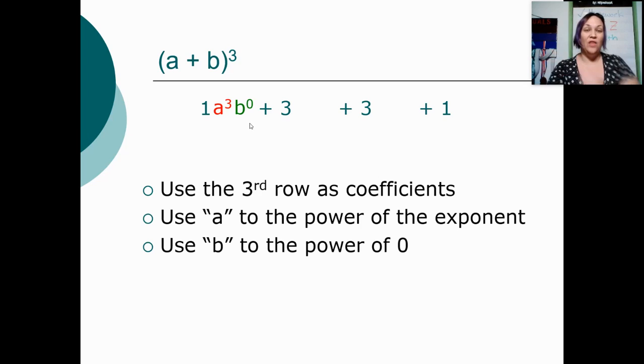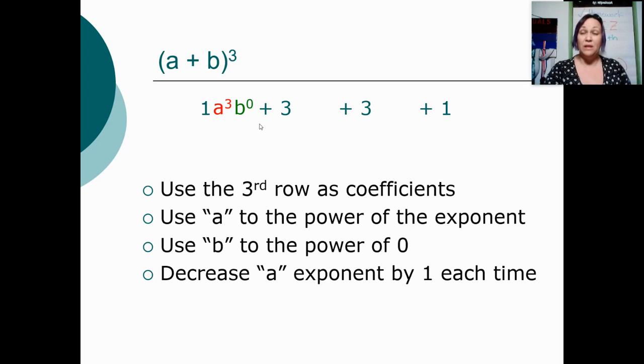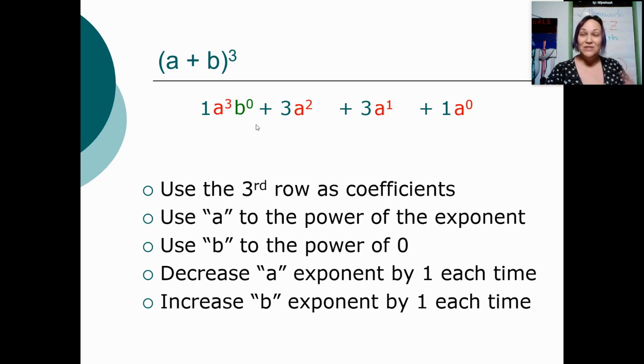Then we need to fill in the other terms. So for your letter a, since we started with a really big number, we're going to decrease it by one each time. So if we start with a to the third, then we'll have a squared, a to the first, and we finish up with a to the zero. And you guessed it, for the b, we're going to increase by one each time since we started with our smallest number. So we start with b to the zero, we're going to go b to the one, b squared, and b to the third.